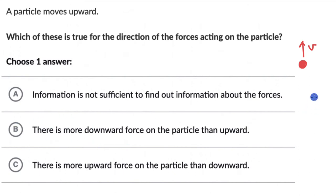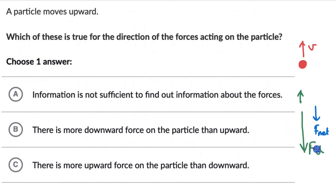Let's think about option B. If there is more downward force than upward force, then there will be a net force in the downward direction. This could be true — we saw it in the last question. When the person threw the ball upwards, during the time the ball took to reach maximum height, the ball was moving upwards but the net force was only in the downward direction, which was the force due to gravity. So this could be true.